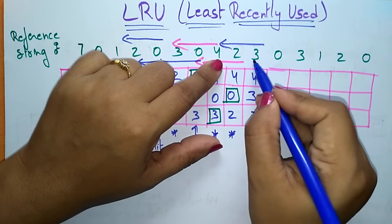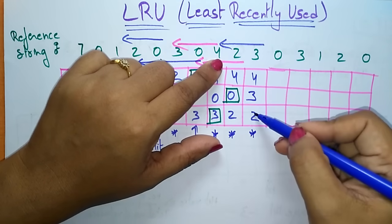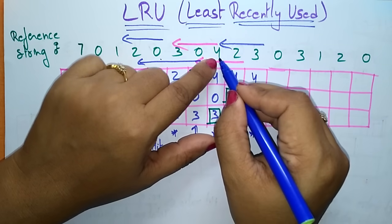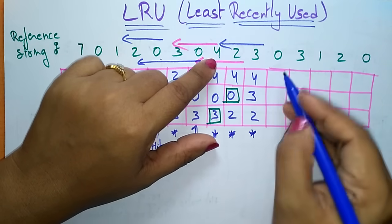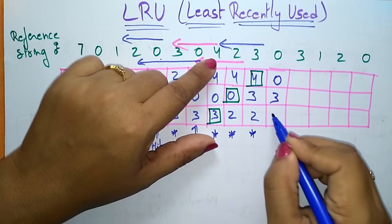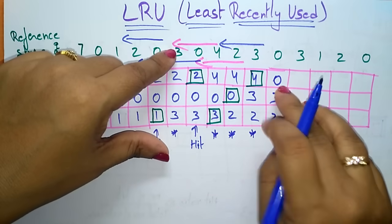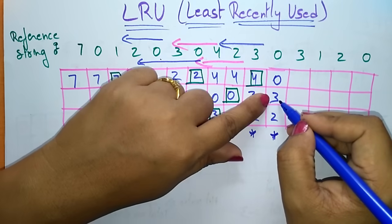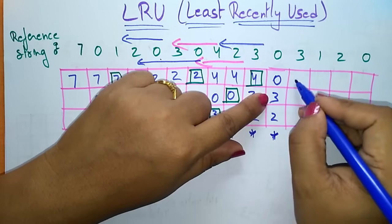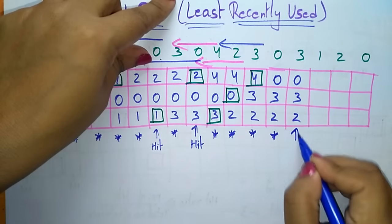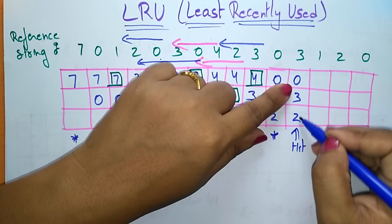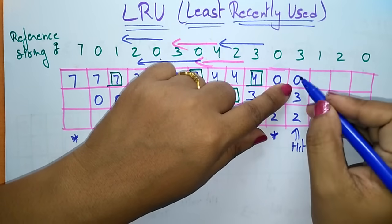From frames 3, 4, 2: 3 is most recently used, 2 is next, and 4 is the least recently used. So I replace 4 with 0, giving frames: 3, 0, 2. This is also a page fault. Now the CPU is demanding page 3 — page 3 is already present in the RAM, so write it as it is. This is a hit.